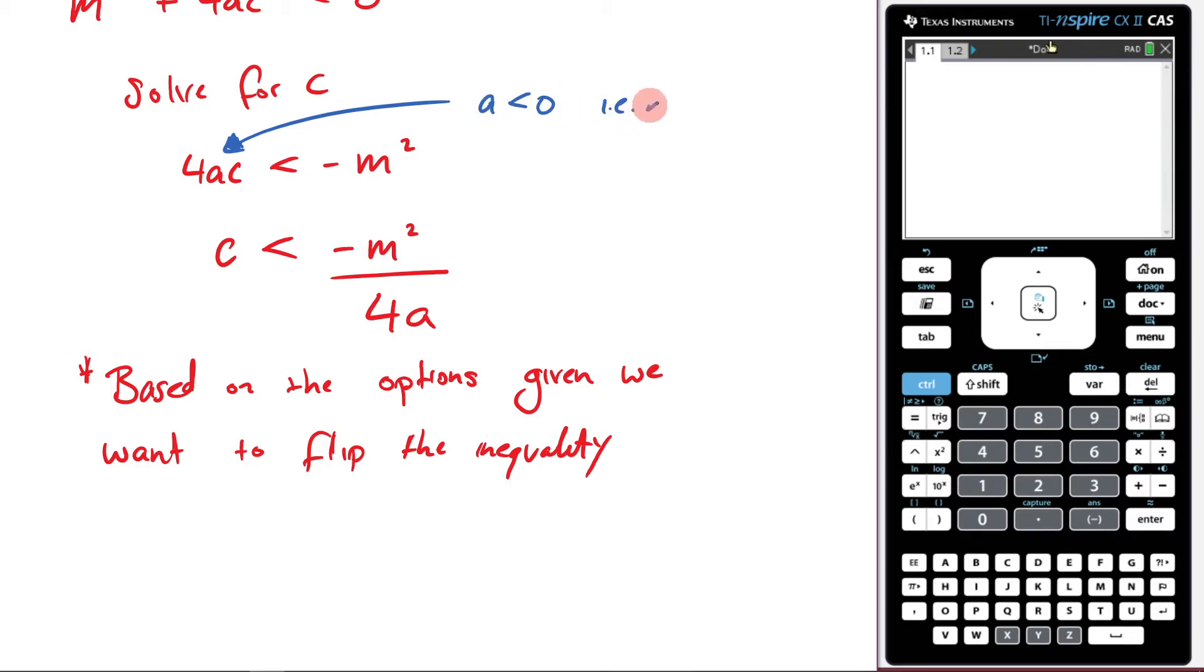when I divide across the inequality, would you agree with me that it would flip the sign? So therefore, a would have to be less than zero in order for this to be a true statement.